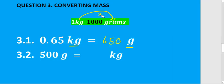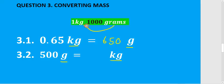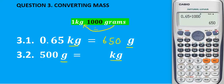3.2 is the opposite. We need to go from grams to kilograms — going backwards — so we divide. Take 500 and divide by 1000, which gives us 0,5 kilograms.